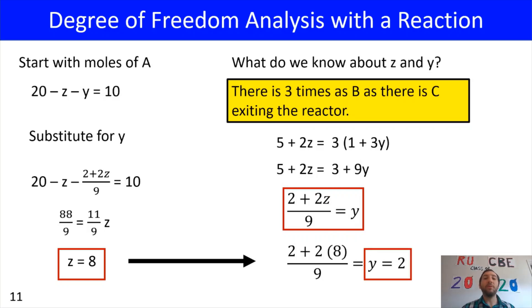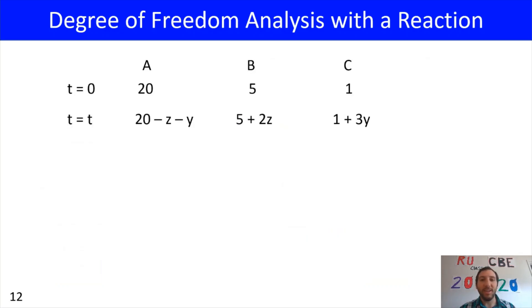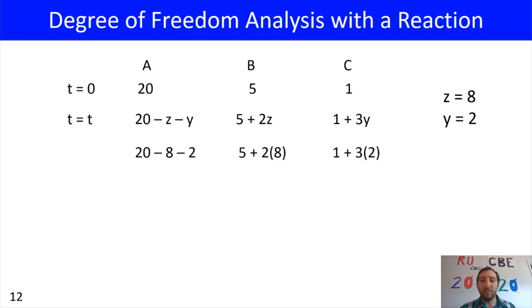Now we substitute Z=8 back into the Y expression: Y = (2 + 2×8)/9 = 2. With Z=8 and Y=2, we substitute into the extent of reaction table. The results are: 10 moles per hour of A, 21 moles per hour of B, and 7 moles per hour of C exiting the reactor.